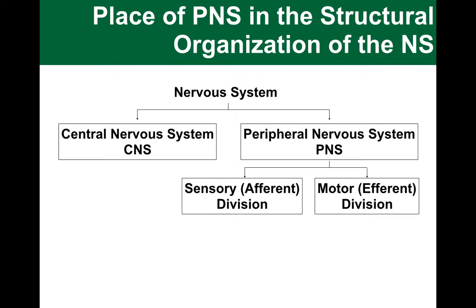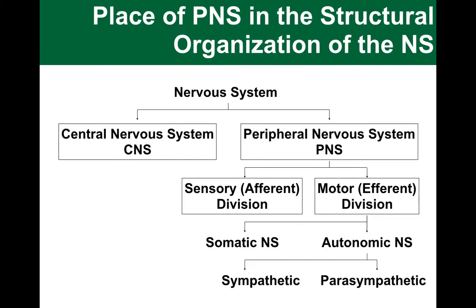We can do a further division of the motor part of the peripheral nervous system into somatic and autonomic branches — somatic being under voluntary and conscious control, while autonomic happens without your control over it. And then we can divide autonomic into sympathetic and parasympathetic branches — our fight or flight or rest and digest branches.